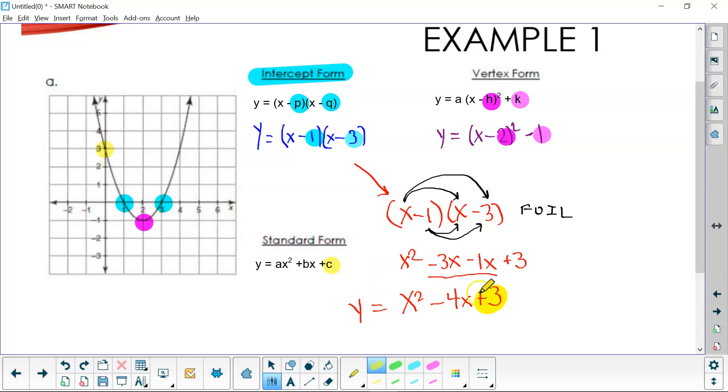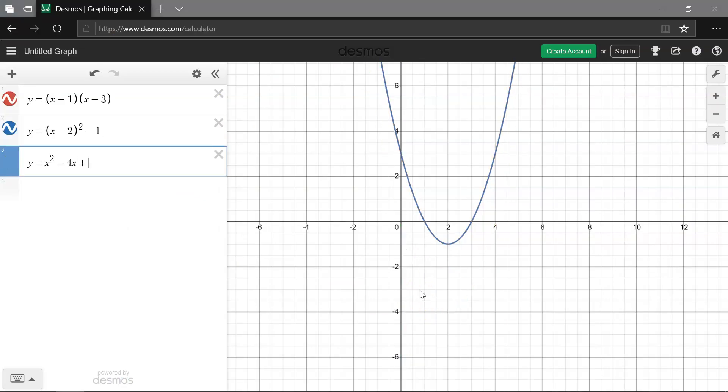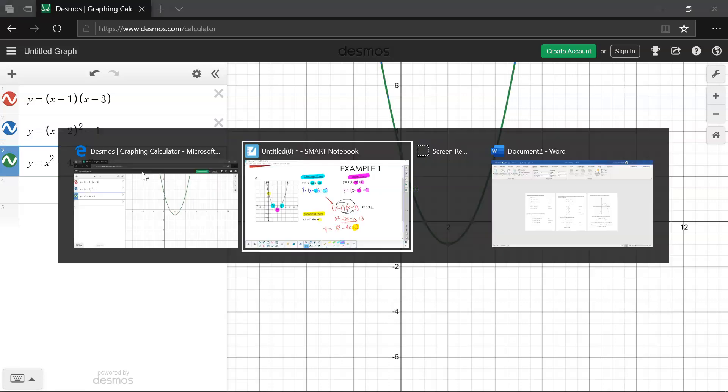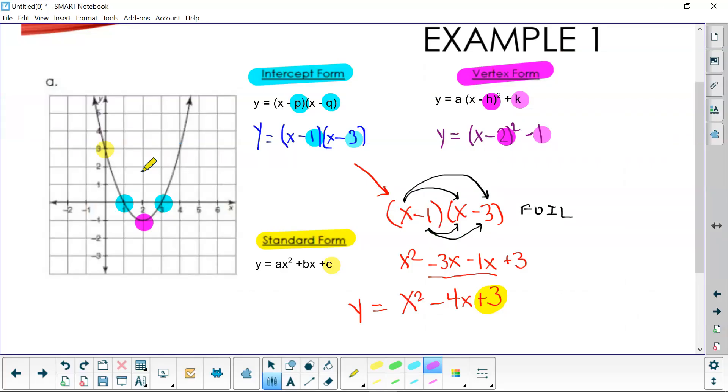We're going to go over to Desmos and graph this and see if it's the same as our intercept form and our vertex form and our standard form to see if all of these are the same. And they should be the exact same. Let's go check it out. x² - 4x + 3. And look at that. Our red graph, our factored form, lies right on top of our blue graph, which is our vertex form, lies right on top of our green graph, which is our standard form. So all three of these forms do in fact result in the same exact parabola.